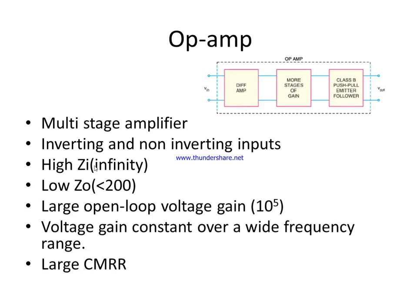Next, input impedance — which is the total resistance of the op-amp — is usually assumed to be infinity, that is very very large. Every op-amp has very large input impedance and very low output impedance, practically less than 200 ohms. So: very high input impedance and very low output impedance.